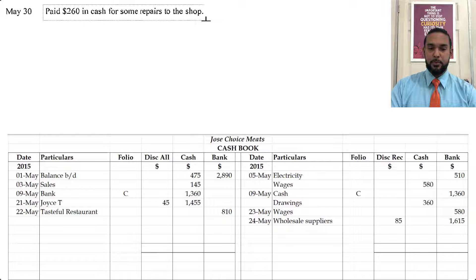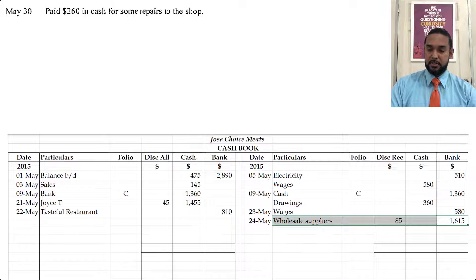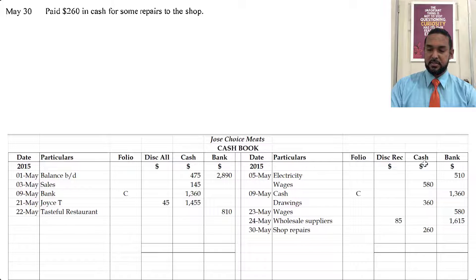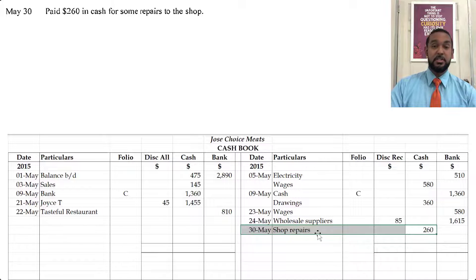Finally, we paid $260 in cash for some repairs in the shop. We're making a payment, so we go on the credit side and put $260 under cash because cash is decreasing. To record a decrease in an asset, you credit. We're going to see 'shop repairs' in the details.